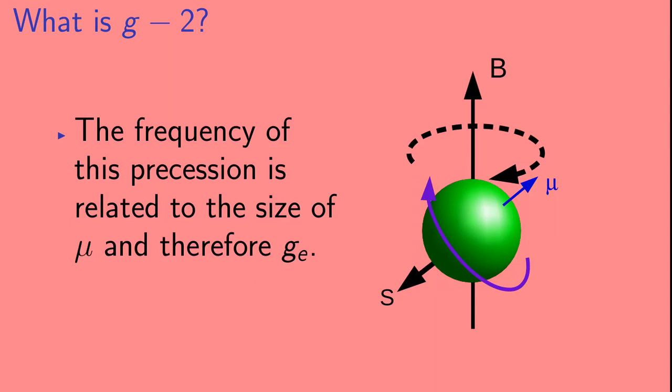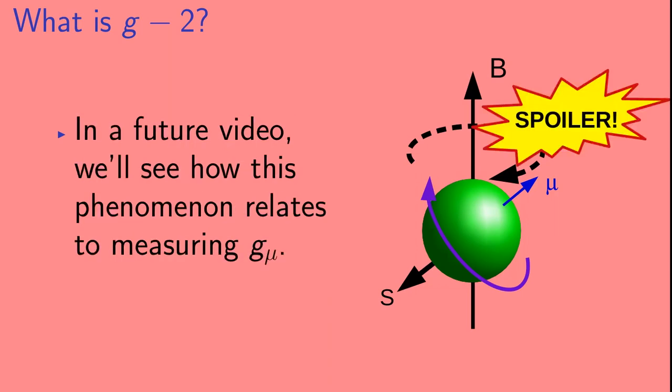The frequency of this precession is related to the size of the magnetic moment mu, and therefore to the G factor. Since we said we were talking about an electron, that means it's related to GE. Now in a future video, we'll see how this phenomenon relates to measuring the magnetic moment of the muon, and therefore G mu.